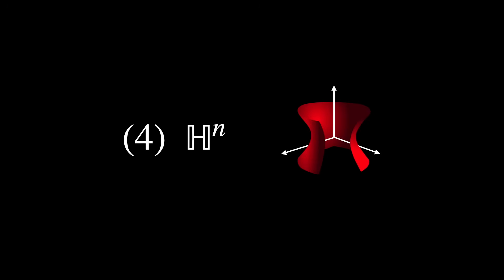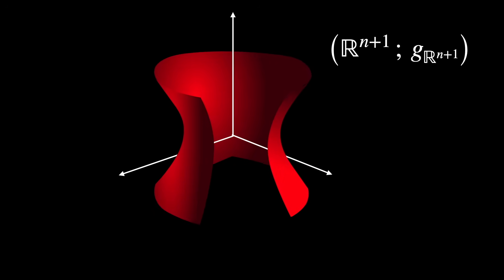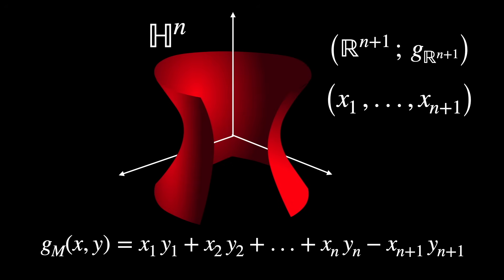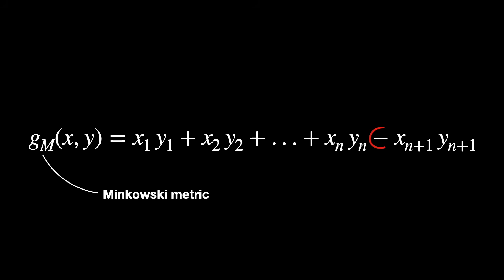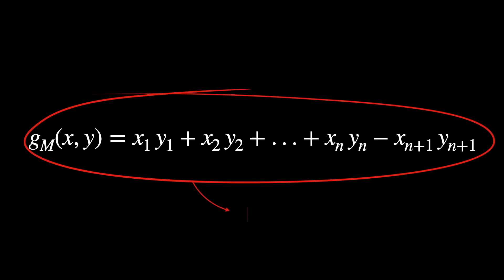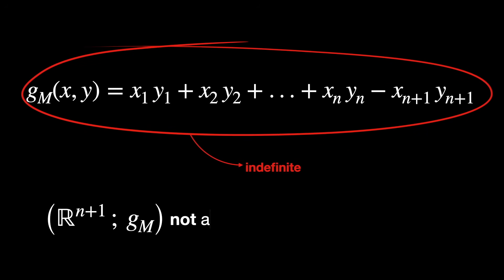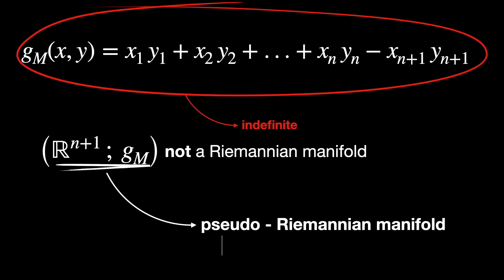Fourth, the hyperboloid model of hyperbolic space. First, we define the ambient space Rⁿ with the appropriate inner product in which the hyperboloid is embedded. This specific inner product is called the Minkowski metric, and it is not positive definite because it allows for negative square lengths — meaning the inner product of two vectors might be negative. We say that this inner product is indefinite, and thus this space is not a Riemannian manifold, but instead a pseudo-Riemannian manifold, or Lorentzian manifold.